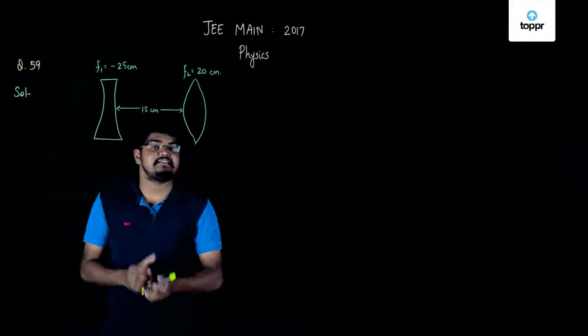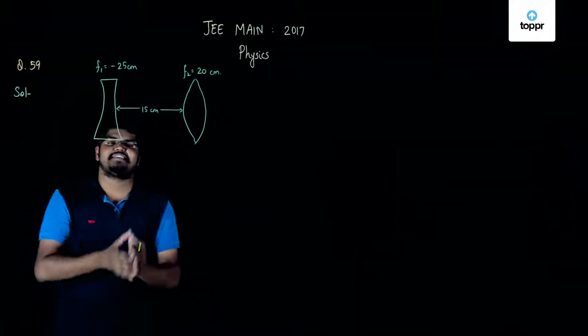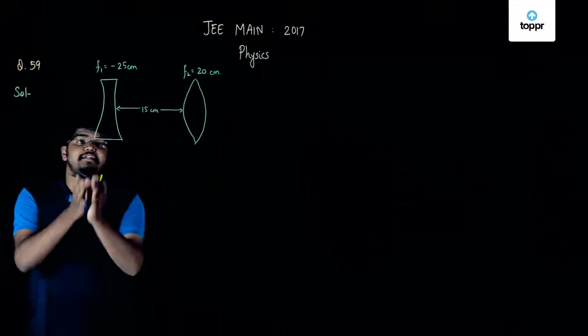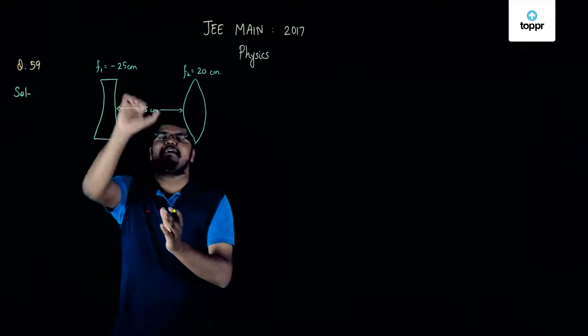Hey guys, let us now discuss the solution of question 59 of physics set D. Here in this particular question we've been given a diverging lens, a focal length 25 centimeter.